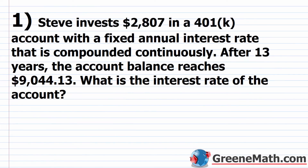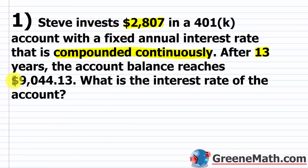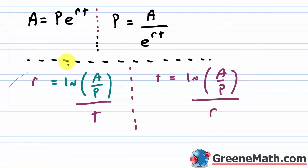Let's take a look at the first problem. Steve invests $2,807 in a 401k account with a fixed annual interest rate compounded continuously. After 13 years, the account balance reaches $9,044.13. What is the interest rate of the account? It's asking for r, so we want the formula solved for r.